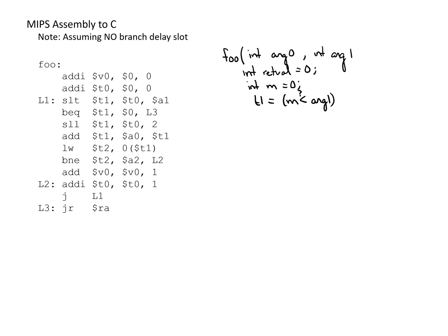The next line has a branch on equal: if T1 equals 0, we branch to label L3. The SLT and branch instructions work together to determine whether we branch. T1 is set based on M and argument 1 — if M is less than argument 1, T1 will be 1 (not equal to 0). So if M is greater than or equal to argument 1, we jump out of the loop to L3.